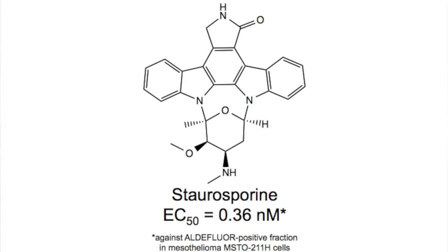Amongst them, staurosporine, a potent protein kinase inhibitor, was identified as a potent inhibitor against cancer stem cell fraction in malignant mesothelioma cells. We found that staurosporine could elicit synergistic efficacy when combined with epirubicin.